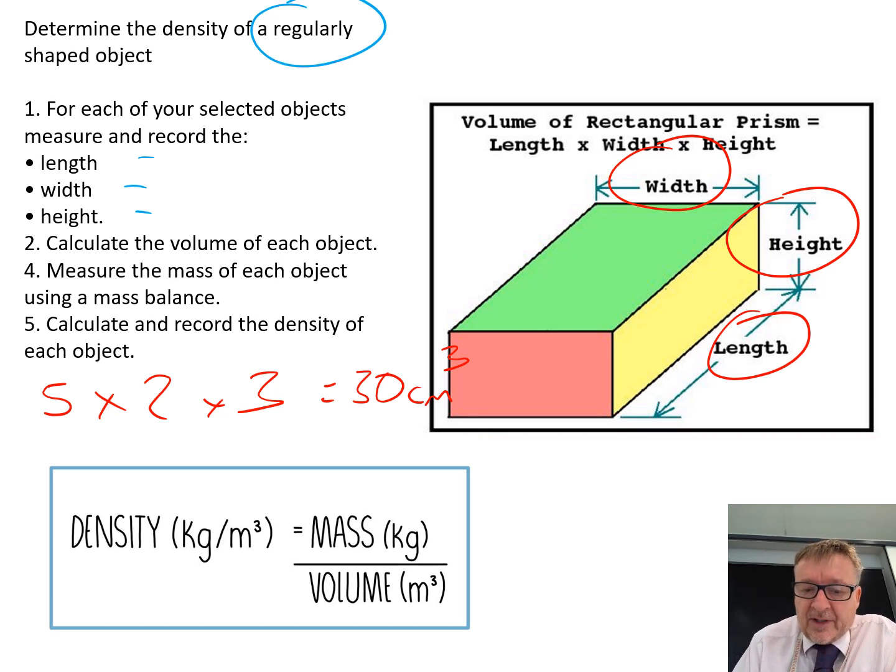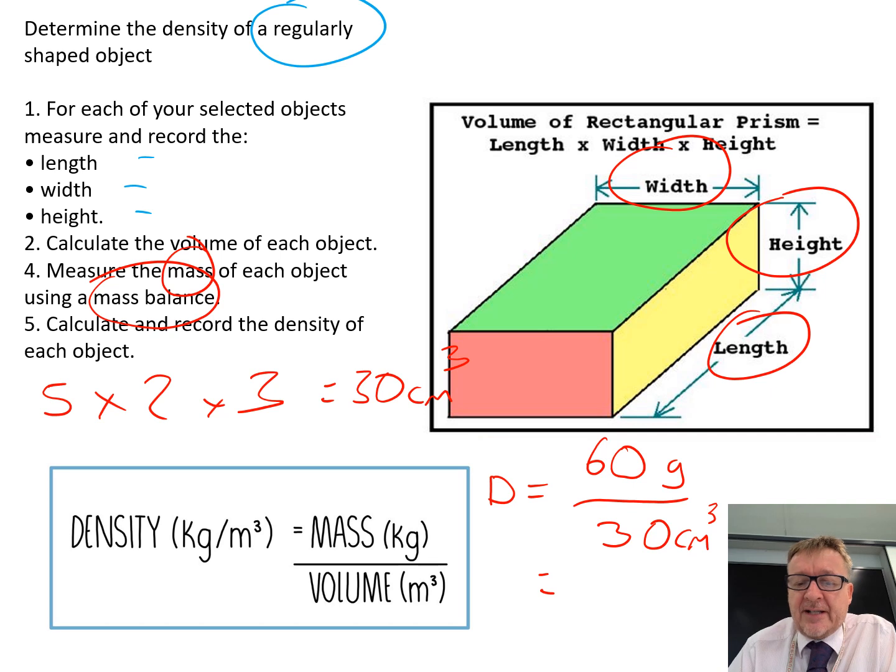What you then do is you've got density equals, you've worked out the volume, it's thirty. Now you get the mass using a mass balance. Here I've got centimetre cubed. I put it on my mass balance and it is sixty grams. So density equals sixty divided by thirty is two, and because I've got grams and centimetre cubed, my units will be grams per centimetre cubed. That's straightforward.